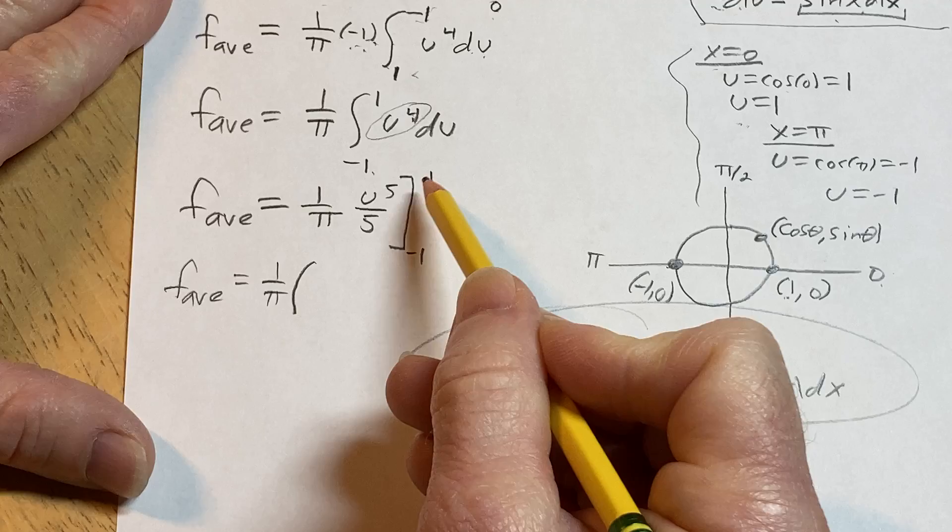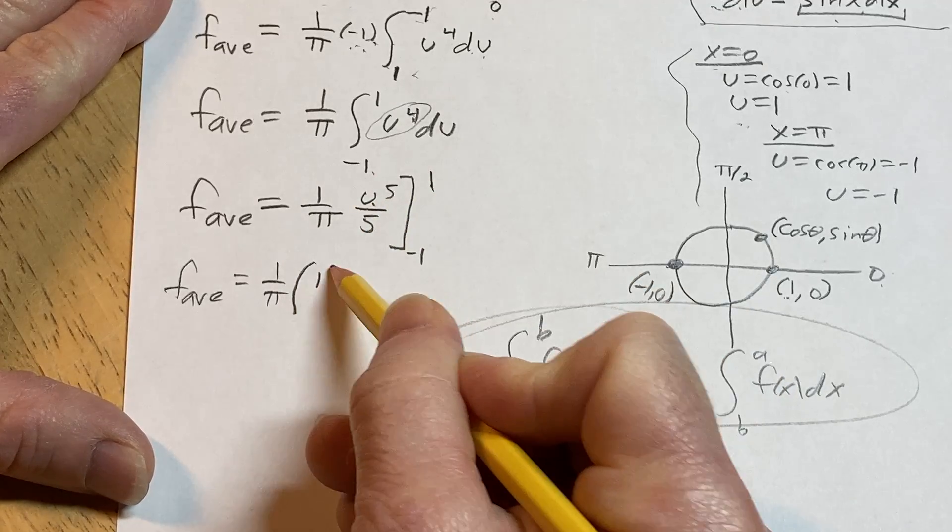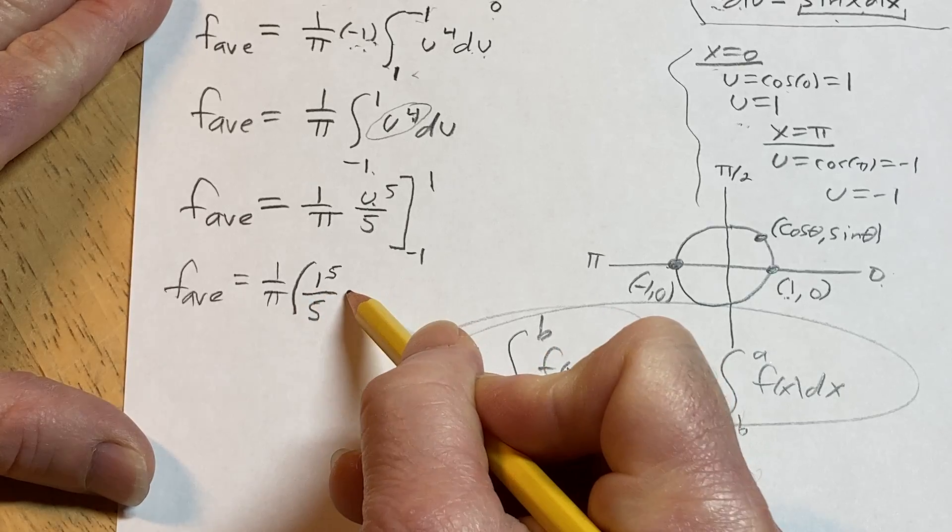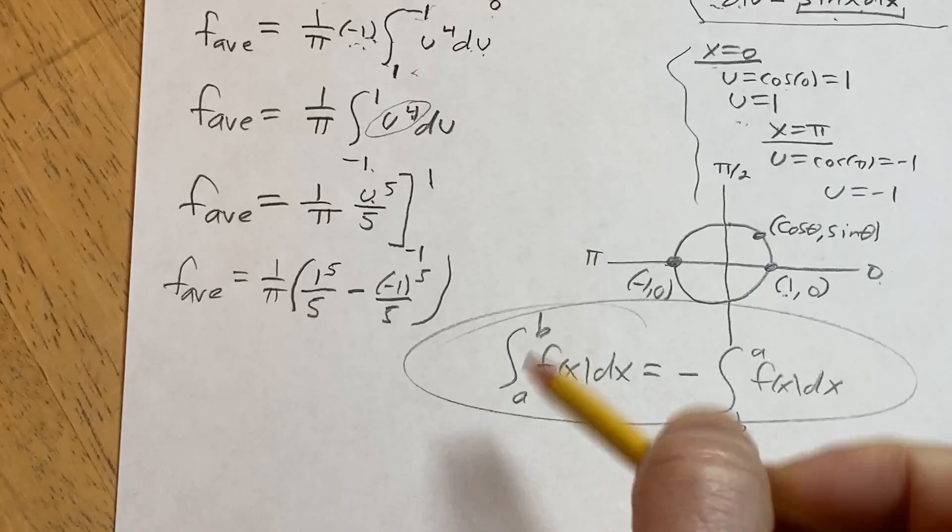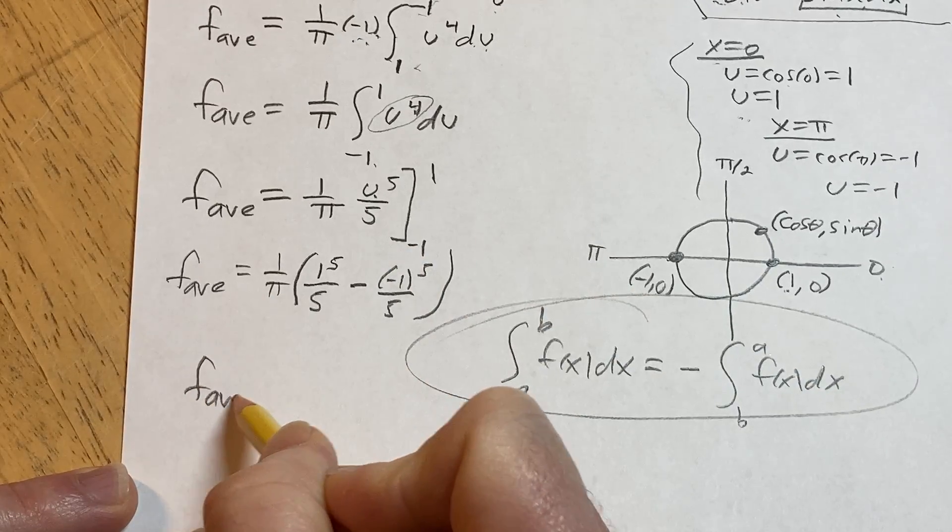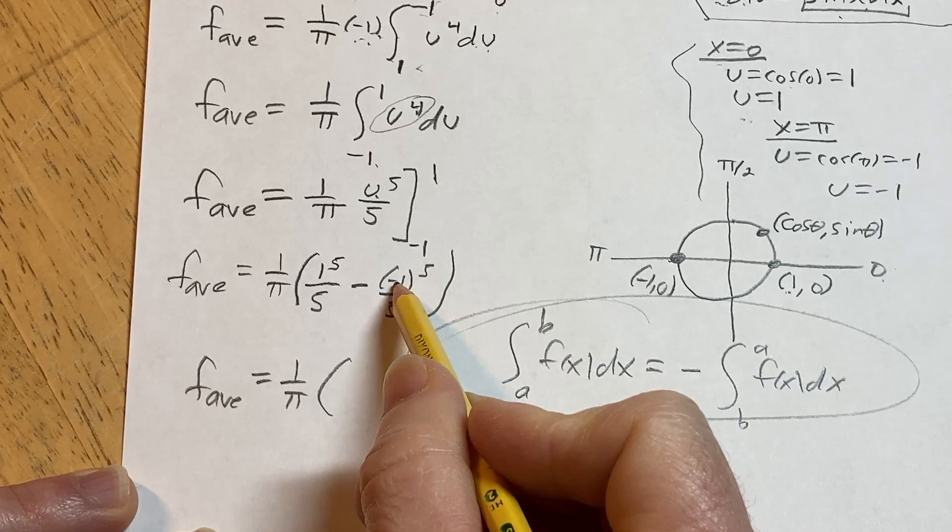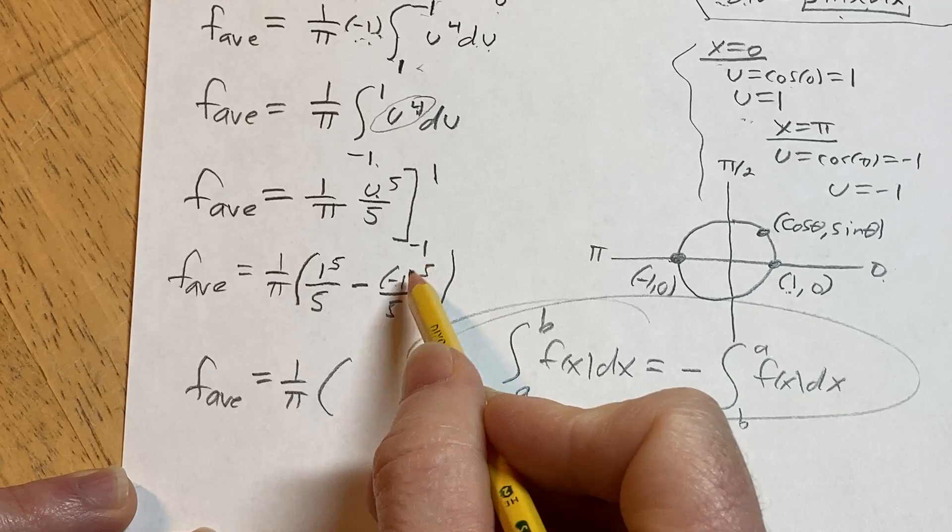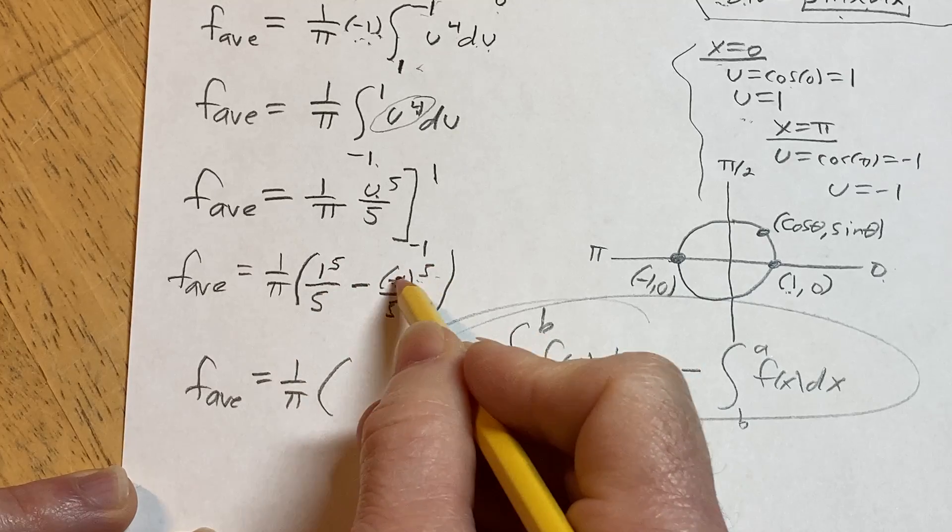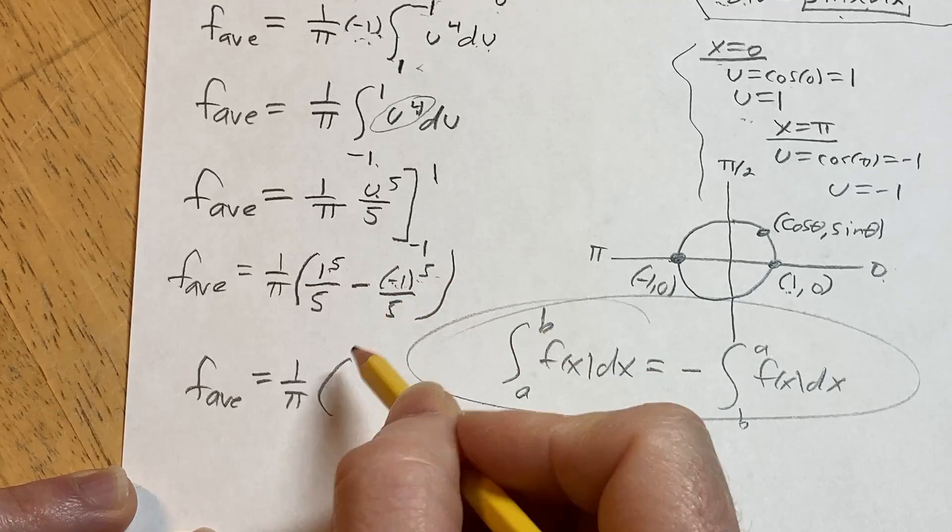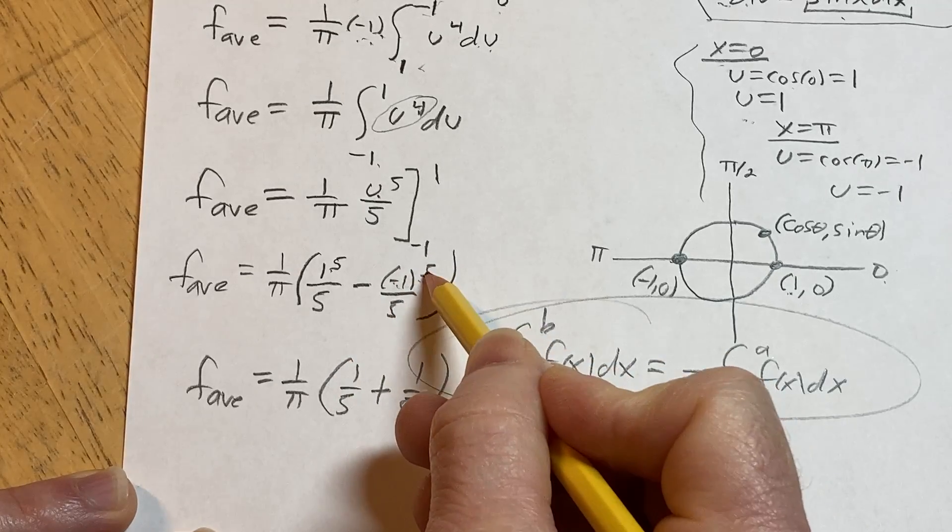So this is 1 over pi. So I'm going to leave this factored outside and then we're going to plug in the top number first. You always plug in that top number first. So it's 1 to the 5th, which is just 1, but I'll write it as 1 to the 5th, minus and then negative 1 to the 5th over 5, just like that. Okay, so this is the average value of a function. And this is equal to 1 over pi. So whenever you have a negative number being raised to an odd power, it's going to stay negative. So 1 to the 5th is 1 and then it's going to stay negative. Negative and negative is positive. And then so that's just going to be 1 fifth. Likewise, this is 1 fifth. So you get 1 fifth plus 1 fifth. Negative and negative is positive. That's because it's odd.